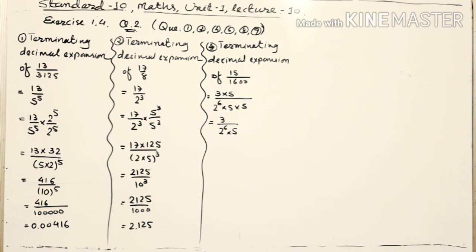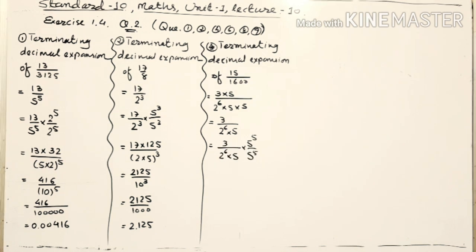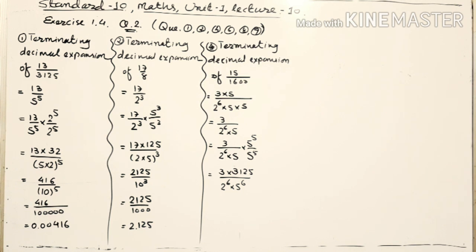In the denominator there is 2 raised to 6 and 5 raised to 1. To convert to decimal expansion, I require equal powers of 2 and 5. Since 2 has power 6 and 5 has power 1, I need 5 more powers of 5. So I multiply 5 raised to 5 in both numerator and denominator. Now in the denominator, 5 has power 1 plus 5 equals 6, matching 2 raised to 6.